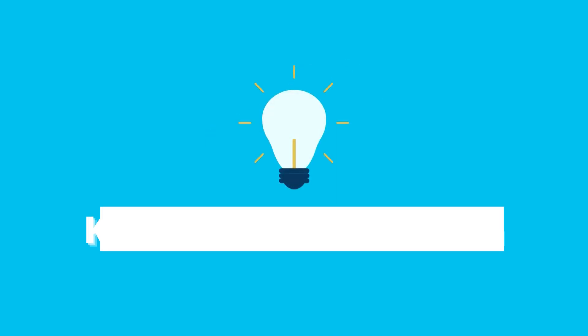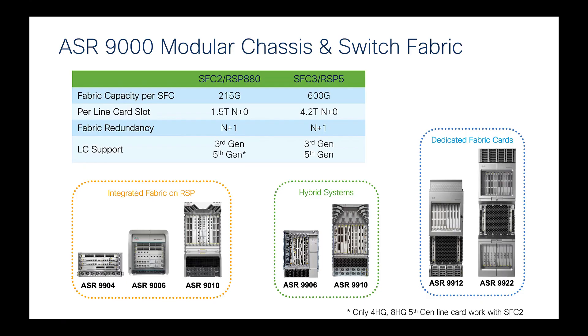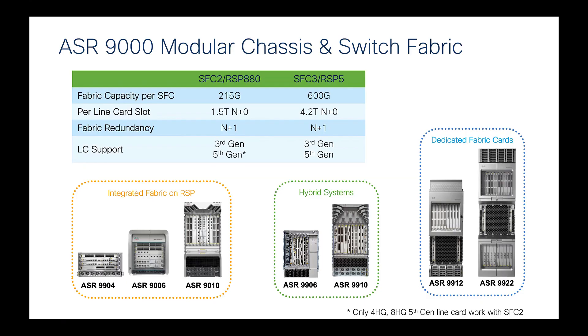We're going to go through all those different scenarios. In general, RP, RSP, and SFC are called the ASR9000 commons. In production, it requires the same generation commons to be inserted into the modular chassis.